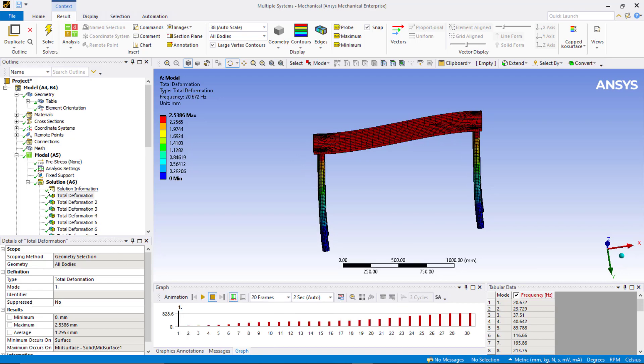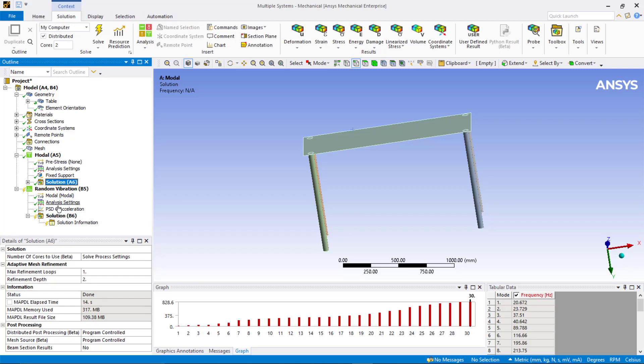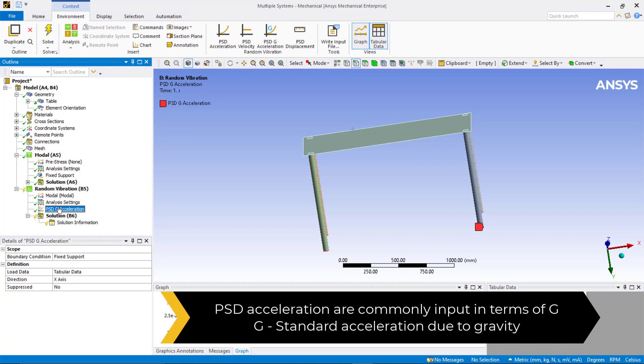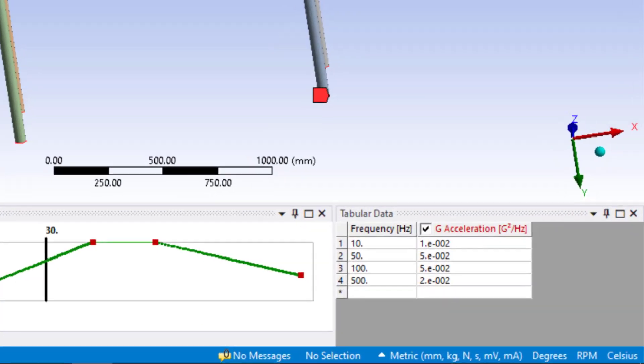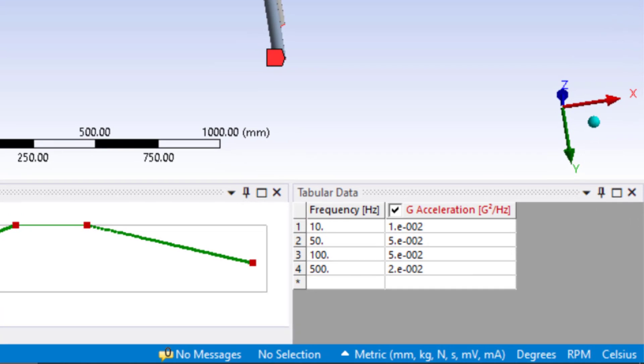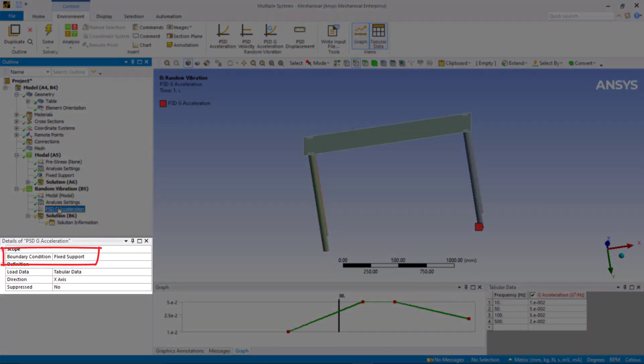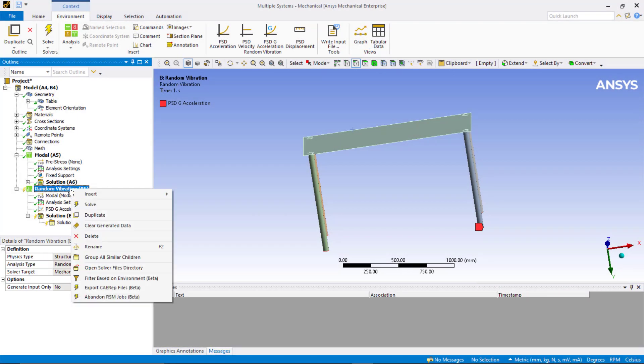Now coming to the random vibration analysis, we are going to use g acceleration as a function of frequency as input PSD. PSD acceleration excitations are commonly reported in terms of g, which is the standard acceleration due to gravity. The g-acceleration value for 10 Hz is defined as 0.01 g squared over Hz and for 50 Hz it is 0.05 g squared over Hz, which remains constant until 100 Hz. Finally, for 500 Hz the g-acceleration value is 0.02 g squared over Hz. In the details tab, we can see that boundary condition is defined as fixed support and direction for the load is x-axis. Solve random vibration system.